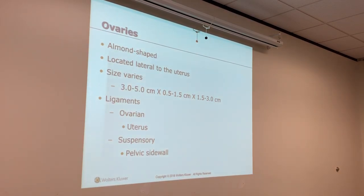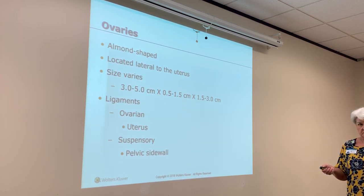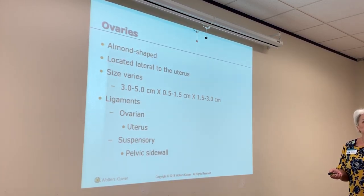That's why we can get ectopics. To clarify: the ovarian ligament connects between the ovary and the uterus — medial ovary to lateral uterus. The suspensory ligament goes from lateral ovary to lateral sidewall.